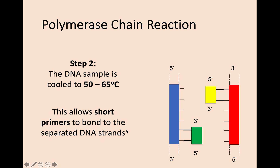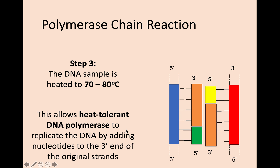In the second part of the polymerase chain reaction, the DNA sample is cooled to 50 to 65 degrees Celsius. This allows primers to bond to the separated DNA strands. As we saw from DNA replication, these primers — short strands of DNA — attach to the 3' end of the DNA strands.